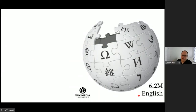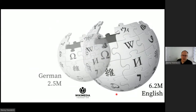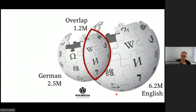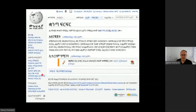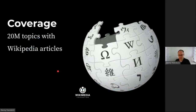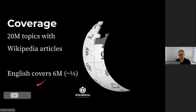Even in English we are missing a lot of knowledge. German, the second most active Wikipedia, has articles on two and a half million topics, but only about half of those topics are also covered by the English Wikipedia. In fact, even Amharic has articles on topics missing from English Wikipedia, such as an article about quanta filtho, an Ethiopian dish. Of the 20 million topics that have Wikipedia articles, only one third are covered by the English Wikipedia.